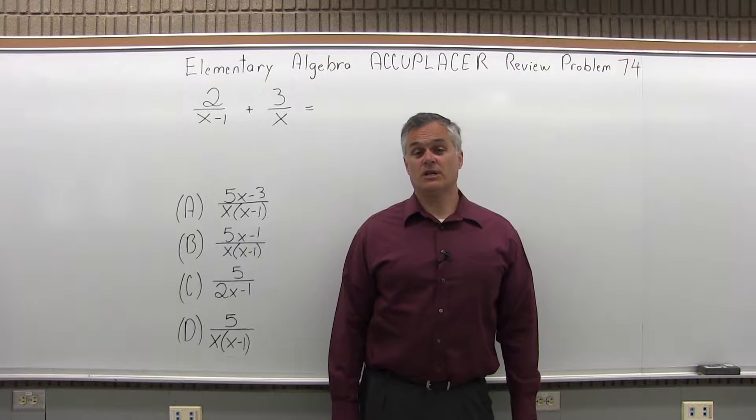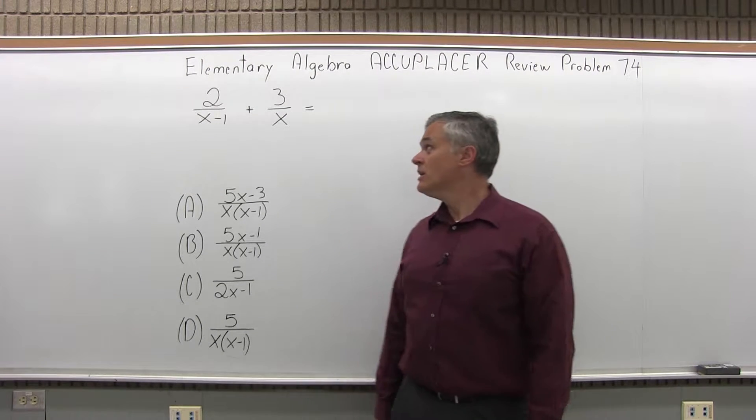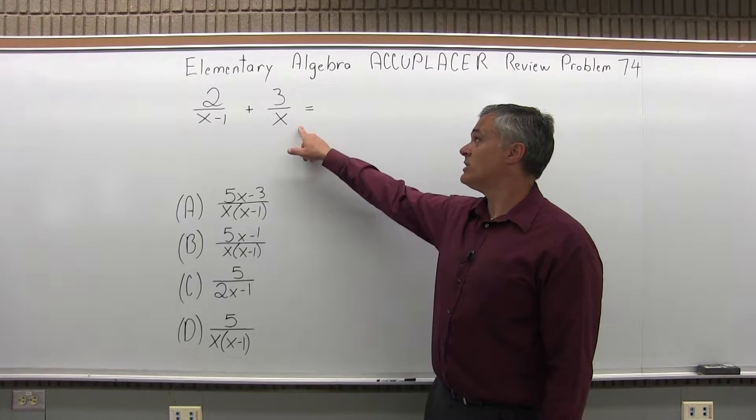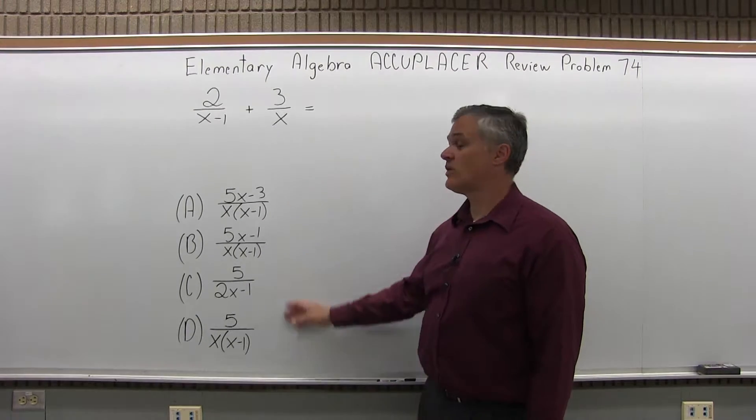This is the Elementary Algebra Accuplacer Review, Problem 74. We have 2 over x minus 1 plus 3 over x equals, and we have four options to choose from.